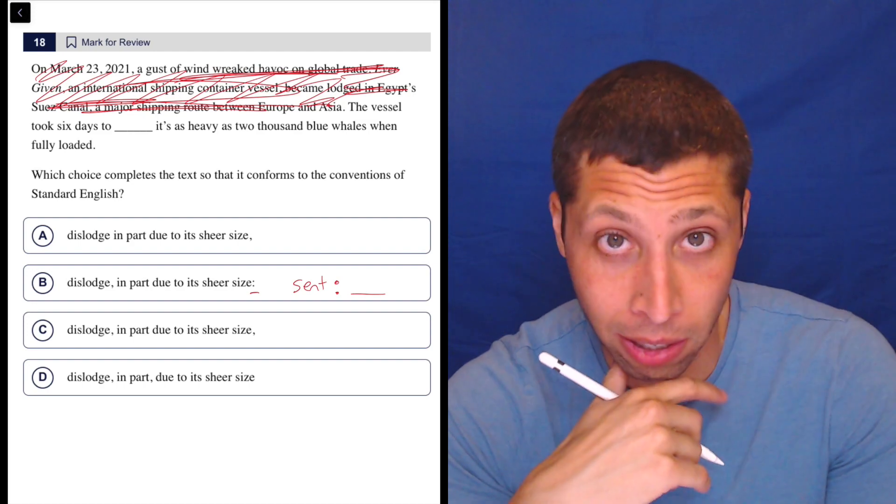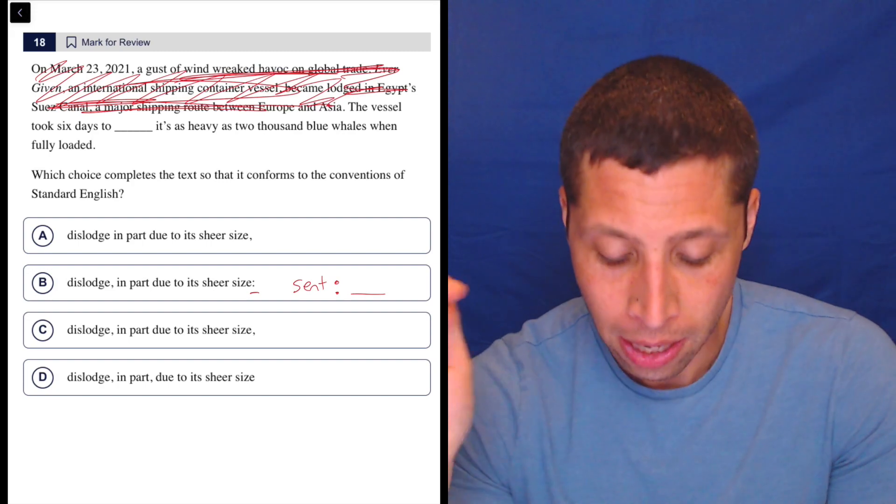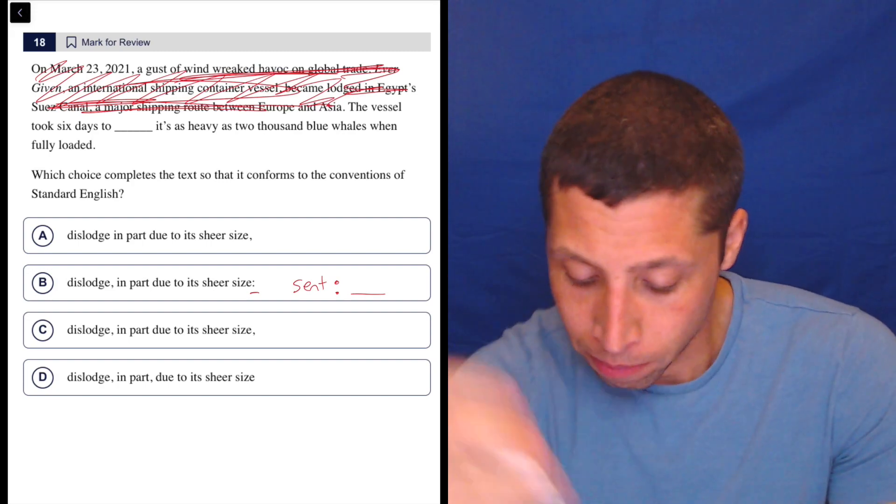The vessel took six days to dislodge. We have a subject, the vessel. It took, that's a verb, and then six days to dislodge, just kind of like the predicate. So that seems okay. Check.